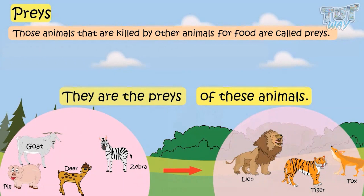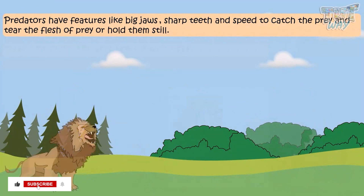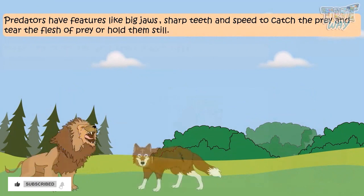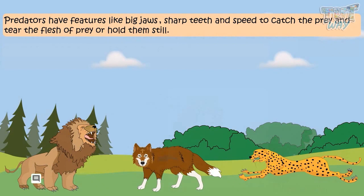Predators have features like big jaws or sharp teeth and speed to catch the prey, tear the flesh of prey, and hold them still.